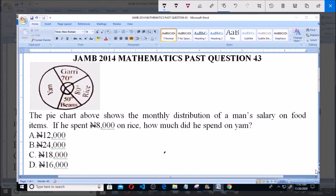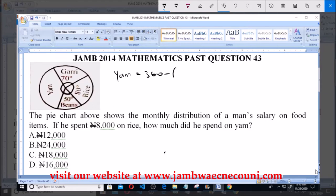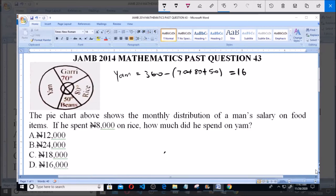Now if the degree of gari is 70, that of rice is 80, and that of beans is 50, then we can say that of yam is equal to 360 minus (70 plus 80 plus 50). 70 plus 80 plus 50, and that will give us 160 degrees. So this is the degree for yam.